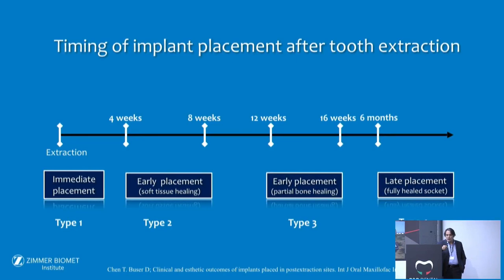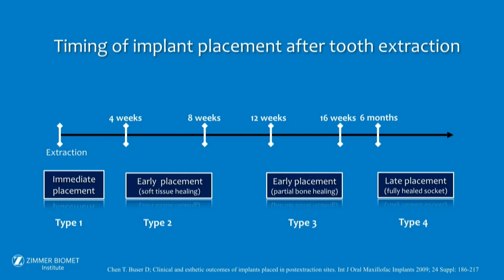Following the timing of implant placement, today we know there are four types of placing an implant after extraction. According to modern literature, most implants are placed following type 1 and type 2, which means in the period up to eight weeks after the extraction.